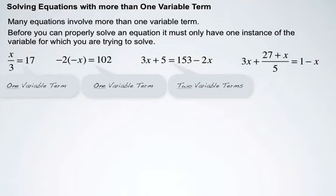And 3x plus 27 plus x over 5 equals 1 minus x is a three variable terms equation because we have 3x here, an x over 5 here, and a negative x here.